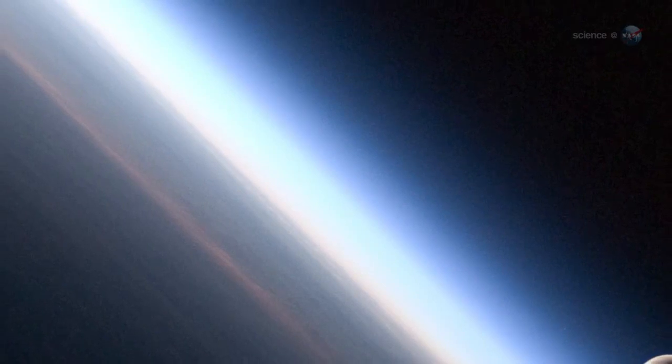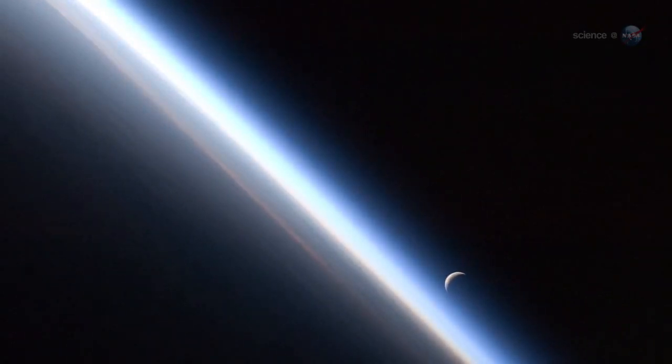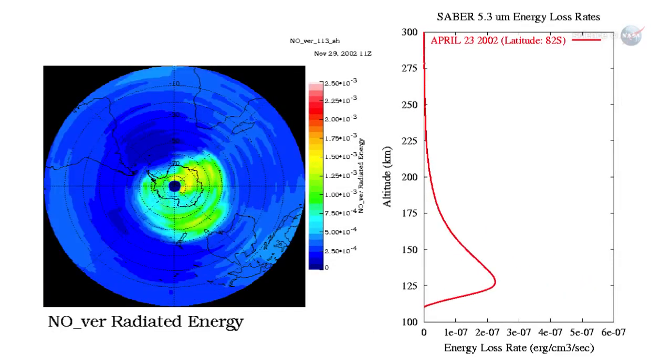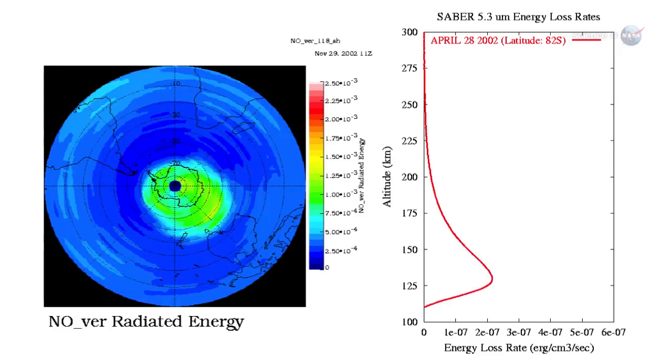Carbon dioxide and nitric oxide are natural thermostats, explains James Russell of Hampton University, SABR's Principal Investigator. When the upper atmosphere, or thermosphere, heats up, these molecules try as hard as they can to shed that heat back into space.